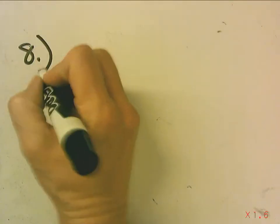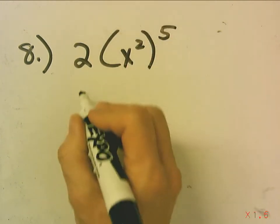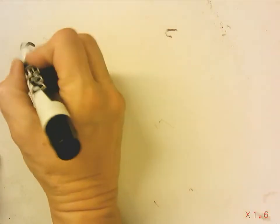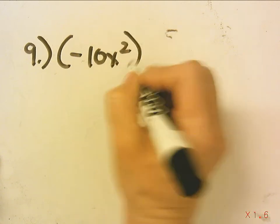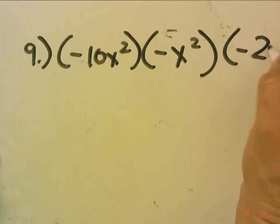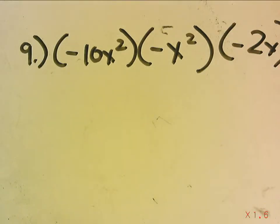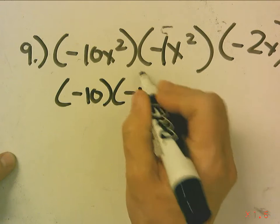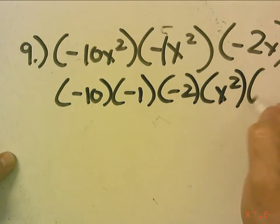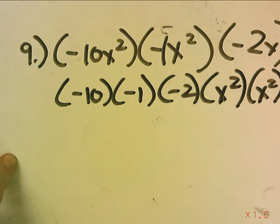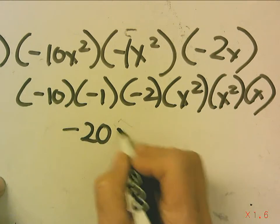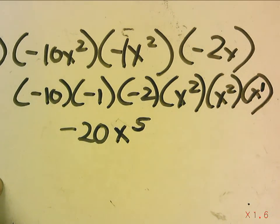Number 8: 2 times x squared to the fifth — this becomes 2 times x to the tenth. Number 9: negative 10x squared, negative x squared, negative 2x. First thing I notice is there are three negatives, so my final answer will be negative. This is actually negative 1, so I'll rewrite this as negative 10, negative 1, negative 2, times x squared, x squared, x. So this becomes negative 10 times negative 1 is positive 10, times negative 2 is negative 20x to the fifth. Don't forget that that's x to the first — negative 20x to the fifth.